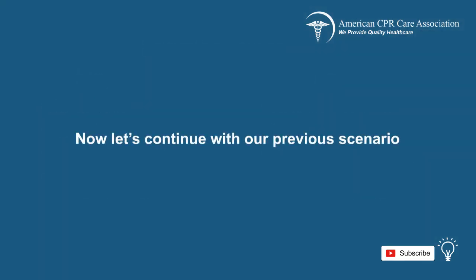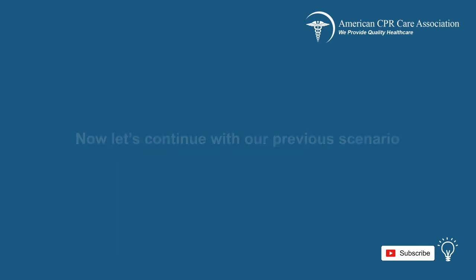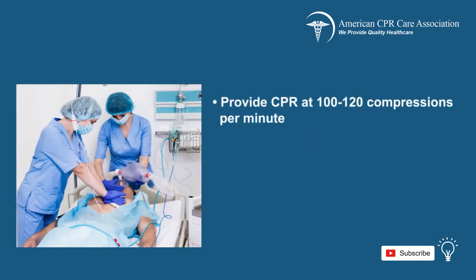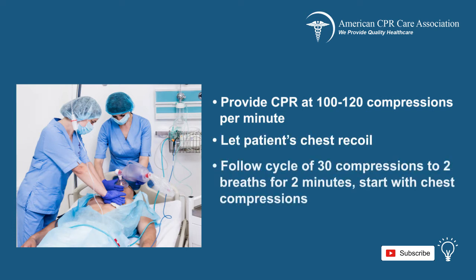Now let's continue with our previous scenario. Continue providing CPR to the patient at a rate of 120 compressions per minute and allow the patient's chest to recoil. Follow the cycle of 30 compressions to 2 breaths on the patient for 2 minutes starting with chest compressions, and get IV or IO access.